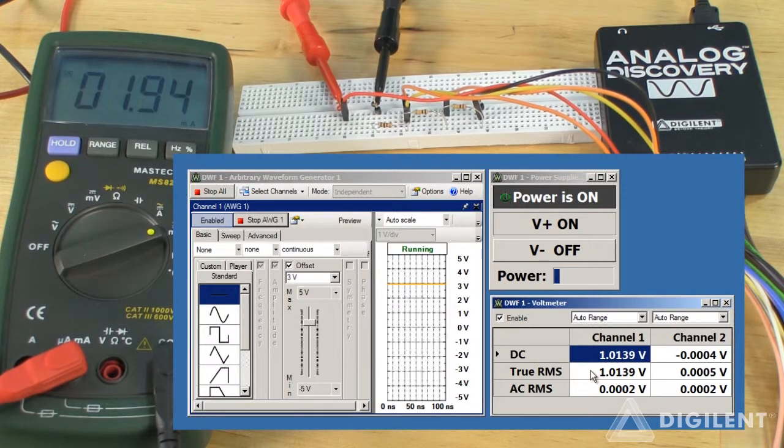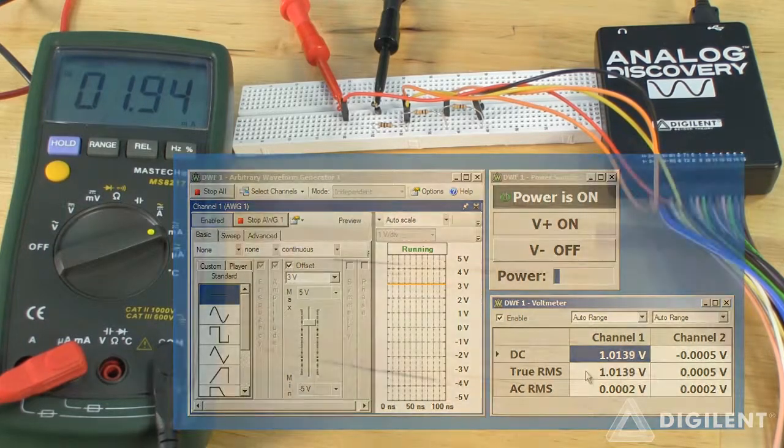The values we're reading are pretty close to the values I calculated earlier, so it looks like I implemented the circuit design correctly.